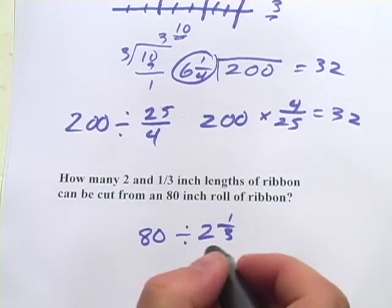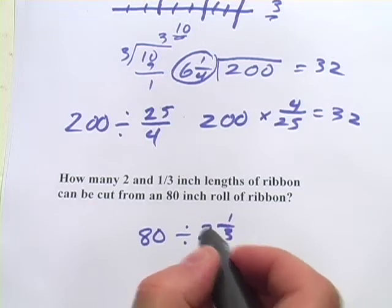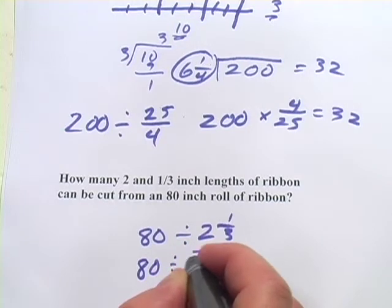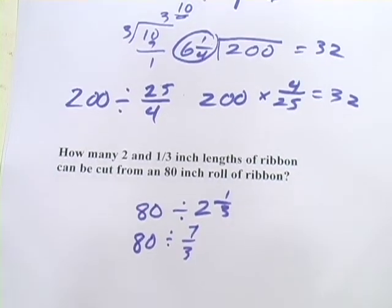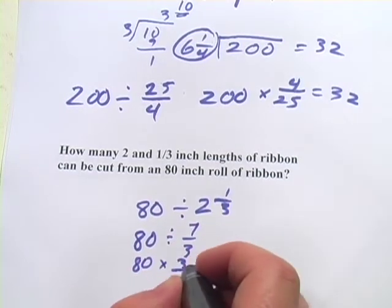So first I'm going to take this mixed number and convert it to an improper fraction. Two times three is six, plus one is seven. So that's seven thirds. So that's 80 divided by seven thirds, and that is the same as 80 times three sevenths.